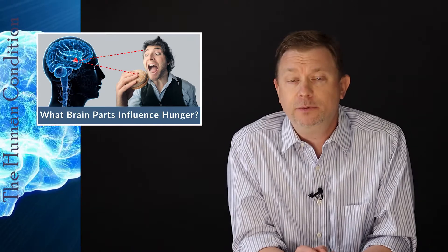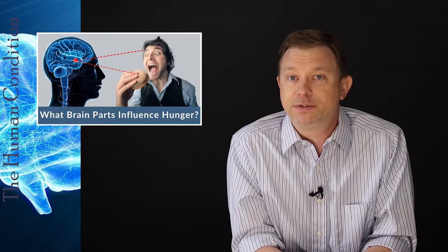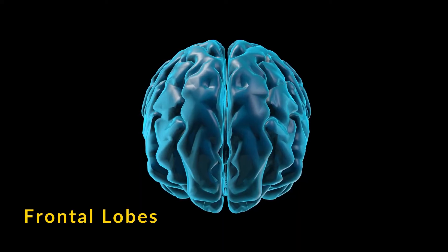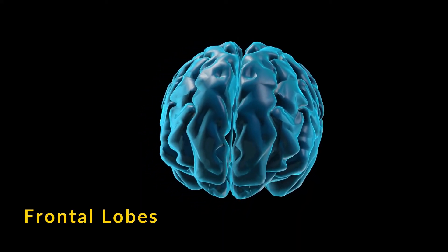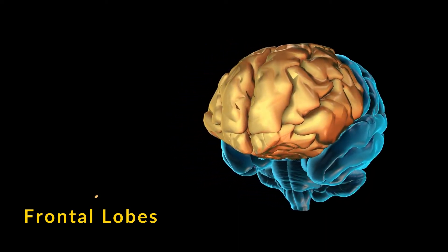So the brain parts that influence hunger are the hypothalamus. And I'd like to end by saying, the hypothalamus depends largely on both of the frontal lobes. This is not discussed very much, but you've got to have strong, healthy, both left and right frontal lobes to have a strong and healthy hypothalamus.